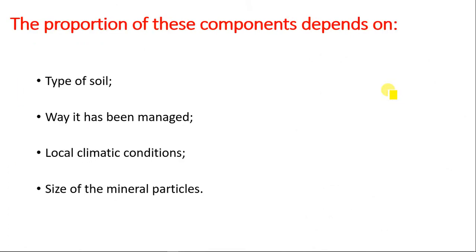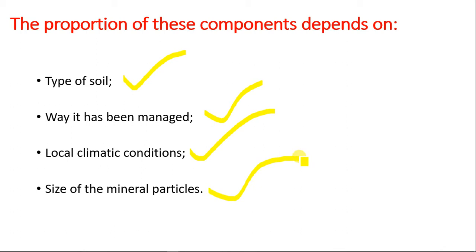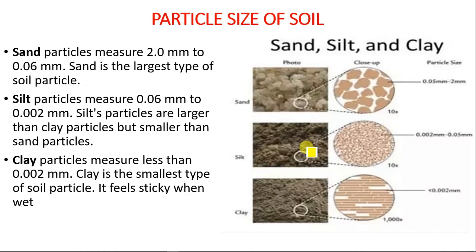The proportion of these four components depends on the type of soil, the way in which the soil is managed, and the local climate of the area. The size of the mineral particles also affects each of these components. In climates with high amounts of precipitation, the soil will be saturated because it will have a high amount of water content within the pore spaces.